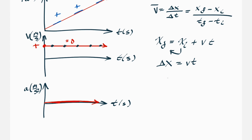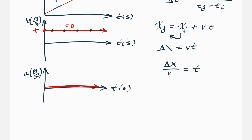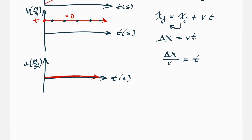If you know how far an object travels and how long it takes, you can solve for velocity: delta x divided by t equals v. Similarly, if you want to know how long it takes, just rearrange: delta x divided by v equals t.